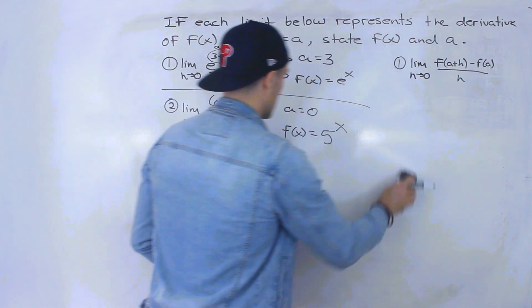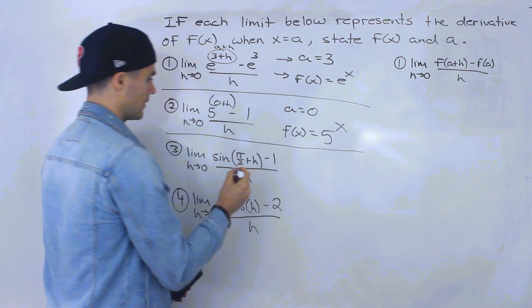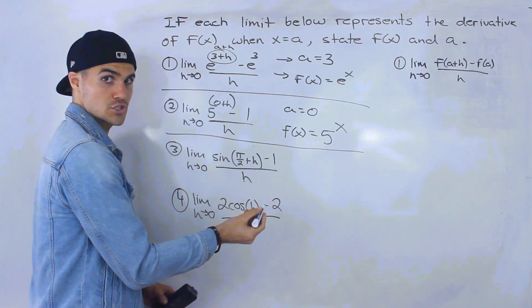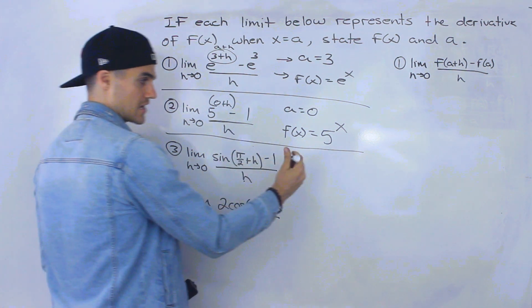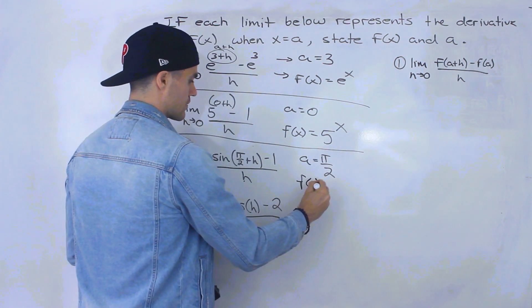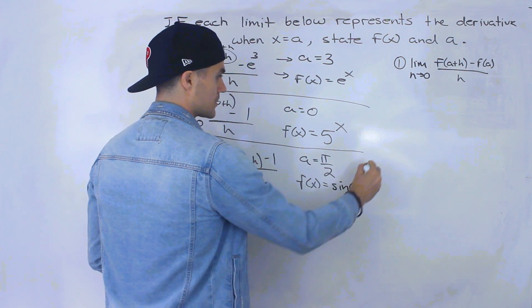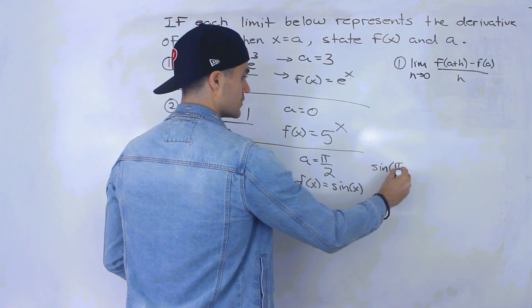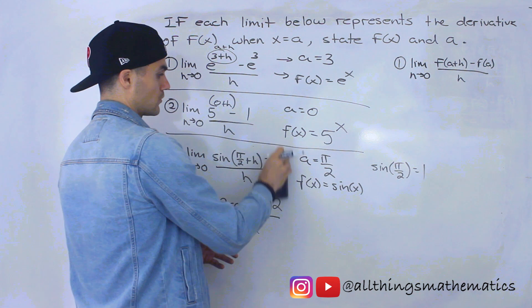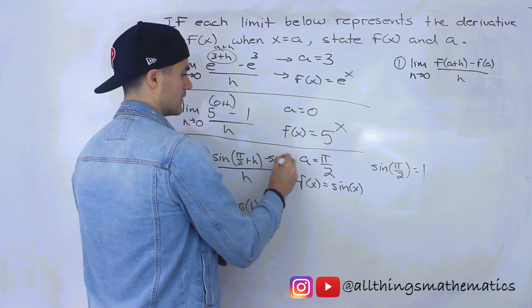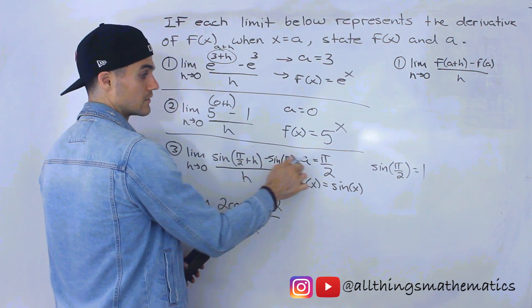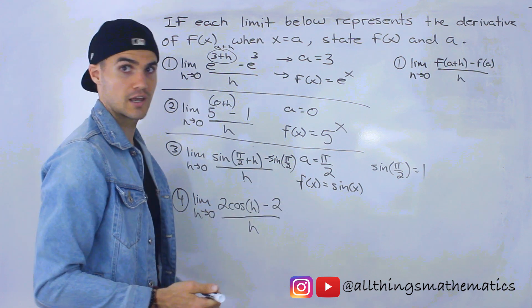Moving on to the third one — this one's not bad. We have the limit as h approaches zero of sine of (π/2 + h) minus 1, all over h. We have (a+h) form, so the a value is π/2. The function is sin(x), and notice sine of π/2 gives us 1, hence the minus 1. So a = π/2 and f(x) = sin(x).